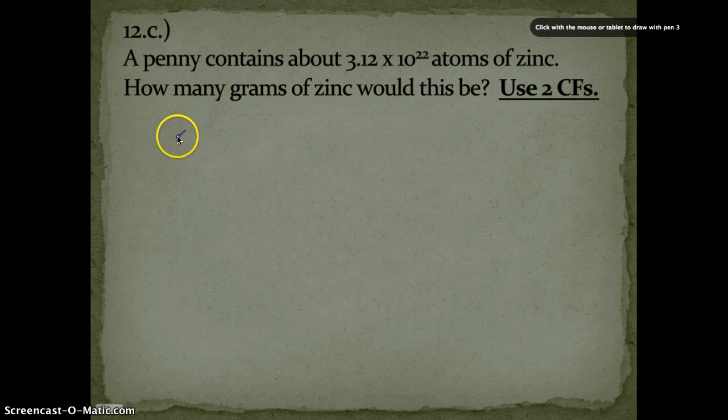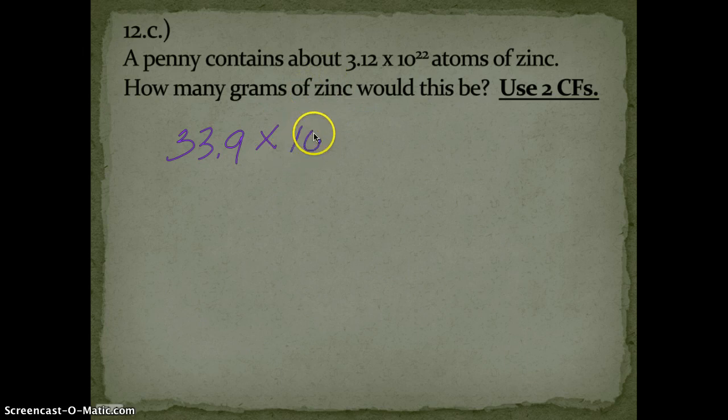When I do all my math I get something like 33.9, and then since I'm subtracting 22 minus 23, I get times 10 to the negative first. This is a pretty basic conversion here.